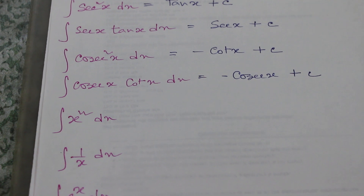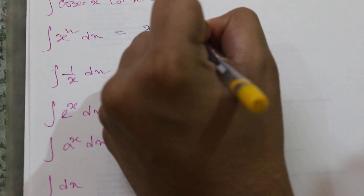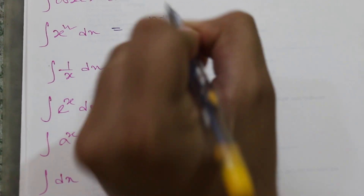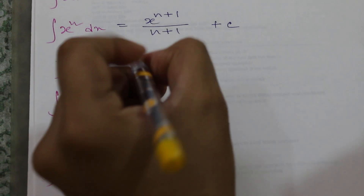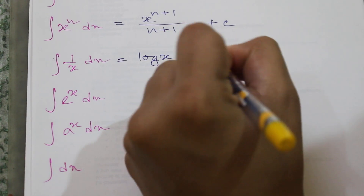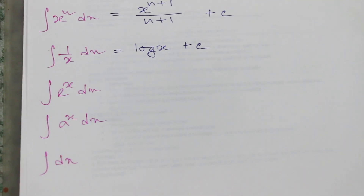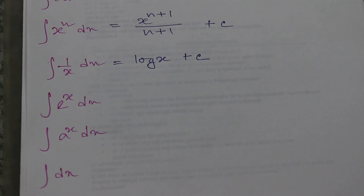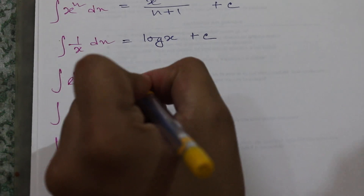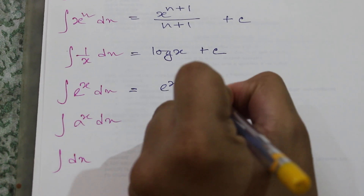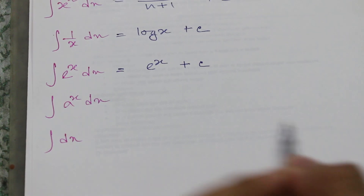Now for algebraic functions: integration of x to the power n dx gives x to the power n plus 1, divided by n plus 1, plus c. In the case of 1 by x, we will get log x plus c — we know that if we differentiate log x the result will be 1 by x, so if we integrate 1 by x we get log x. Integration of e to the power x gives e to the power x plus c.